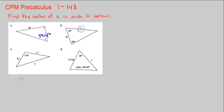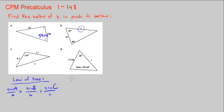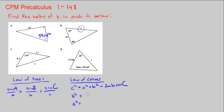What can help us is either the law of sines — the ratio of sine of A over side a equals sine of angle B over side b, equals sine of angle C over side c — or we might have to use the law of cosines. The law of cosines starts like the Pythagorean theorem: c² = a² + b² − 2ab·cos(C). We can also solve for b²: b² = a² + c² − 2ac·cos(B), and a² = b² + c² − 2bc·cos(A).